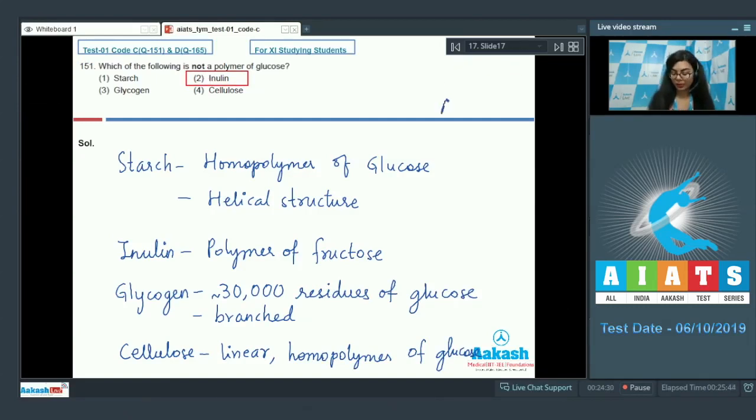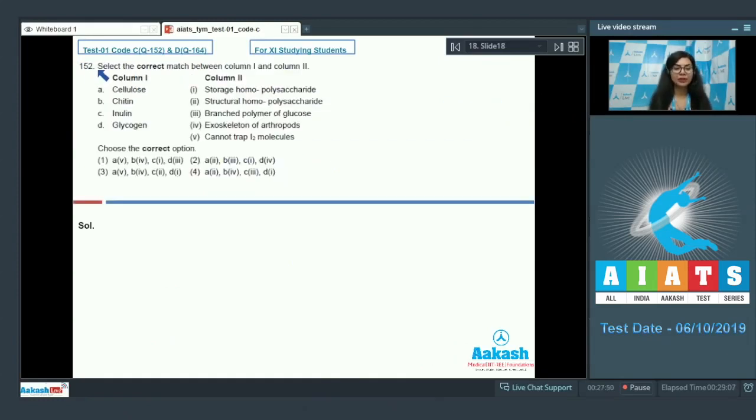Question 152: Select the correct match between column one and column two. Column one has cellulose, chitin, inulin, and glycogen, and column two has certain features. Let's go over them one by one. Cellulose is present in plant cell walls and is an important structural component, thus it is called a structural homopolysaccharide.